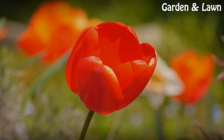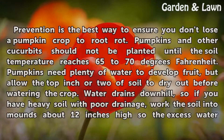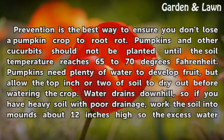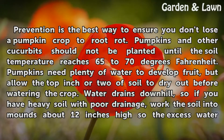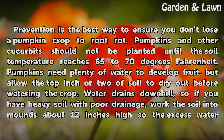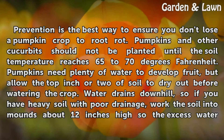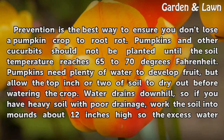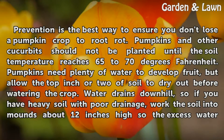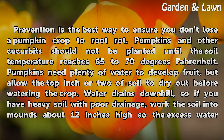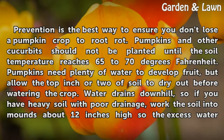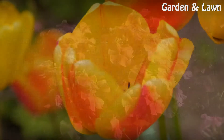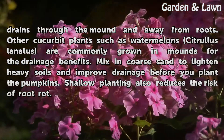Prevention is the best way to ensure you don't lose a pumpkin crop to root rot. Pumpkins and other cucurbits should not be planted until the soil temperature reaches 65 to 70 degrees Fahrenheit. Pumpkins need plenty of water to develop fruit, but allow the top inch or two of soil to dry out before watering the crop. If you have heavy soil with poor drainage, work the soil into mounds about 12 inches high so the excess water drains through the mound and away from the roots.